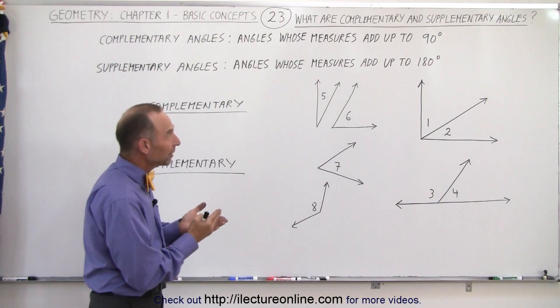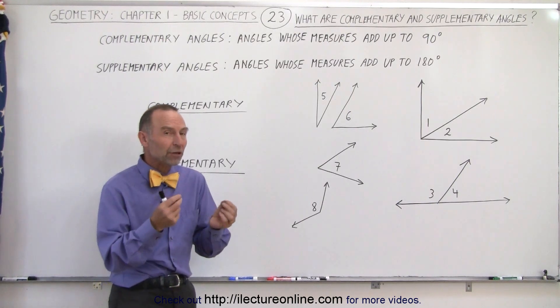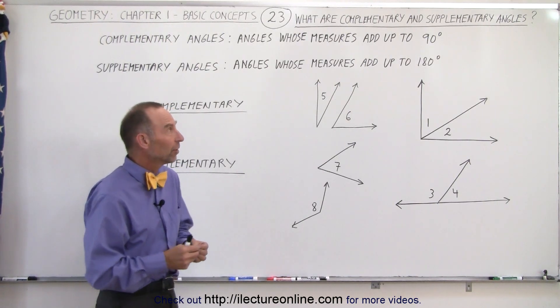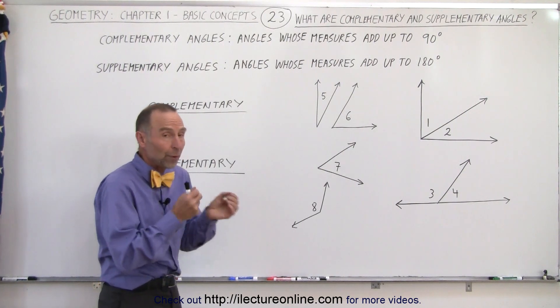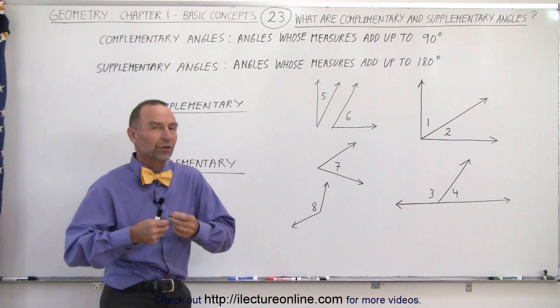So complementary angles are two angles whose measures add up to 90 degrees, and supplementary angles are two angles whose measures add up to 180 degrees.